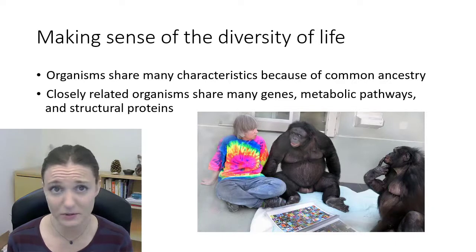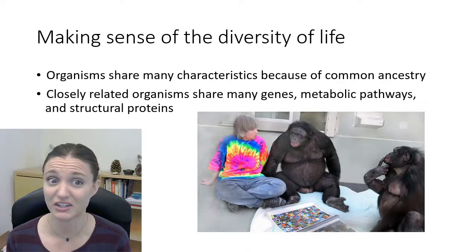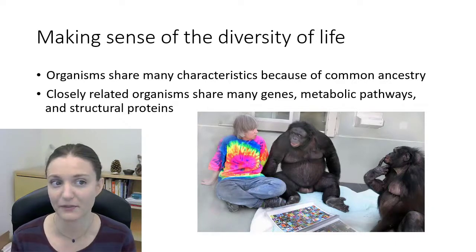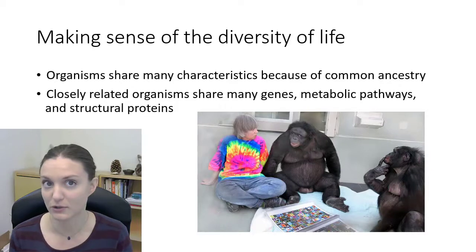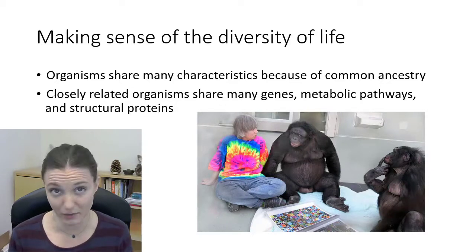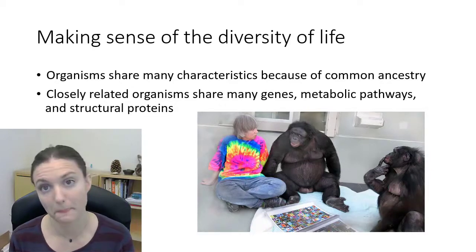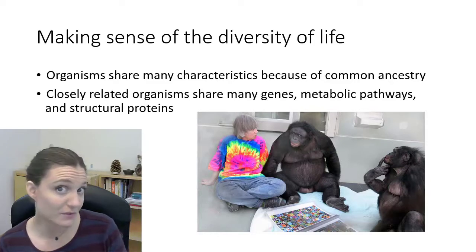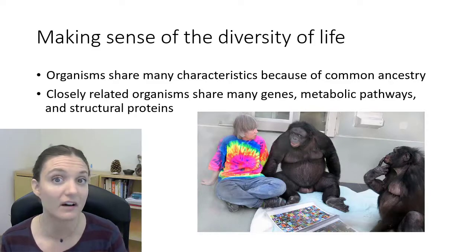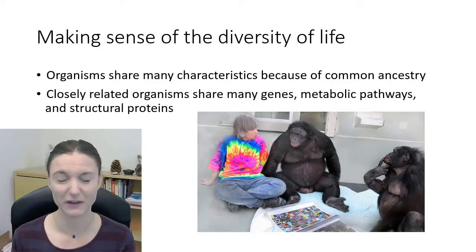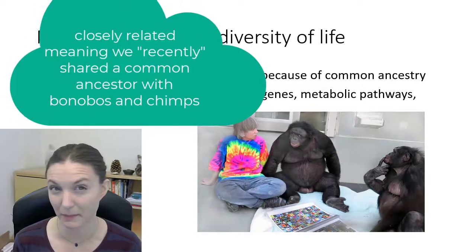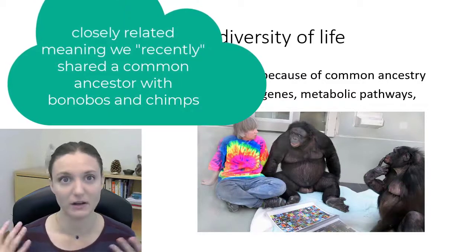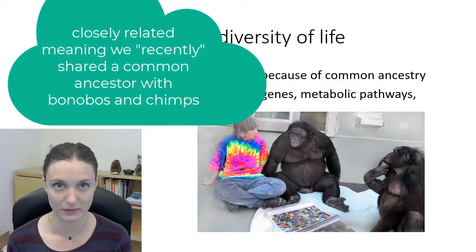Closely related organisms are going to share a lot of the same genes, the same metabolic pathways, structural proteins, and anatomical features. For example, us and bonobos and chimps share very similar structures, very similar metabolic pathways, and very similar genes because we are very, very closely related.